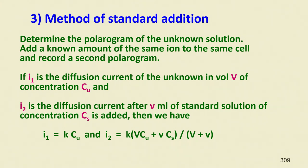A known amount of the same analyte is added to the sample and a second polarogram is recorded, along with the polarogram of the unknown alone. Two diffusion current values are obtained: I₁ in volume V of the solution of unknown concentration C_u, and I₂ after adding a volume v of standard solution of concentration C_s.